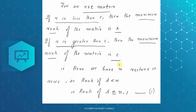Since we have N vectors that are linearly dependent and their linear combination is the 0 vector, the rank of A will be less than N, which means rank of A is less than or equal to N-1. This is equation 1.